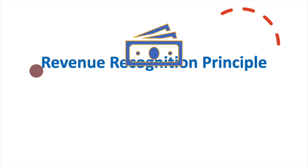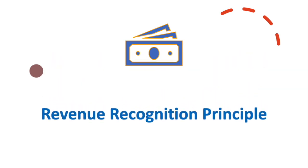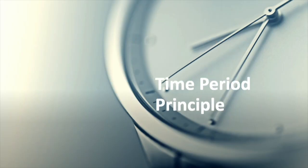The twelfth principle is the revenue recognition principle. This is the concept that you should only recognize revenue when the business has substantially completed the earnings process. That means revenues must not be prematurely recorded or postponed to another period. It is stated that most fraud and creative accounting transactions are related to revenue recognition, which is why standard-setting bodies have developed a massive amount of guidance on what constitutes proper revenue recognition.